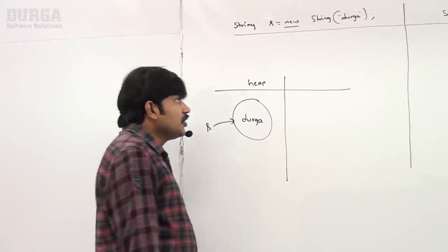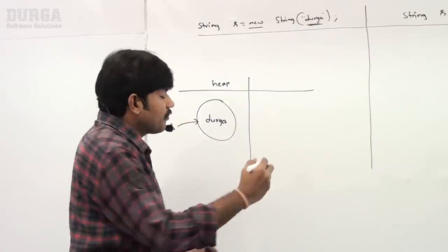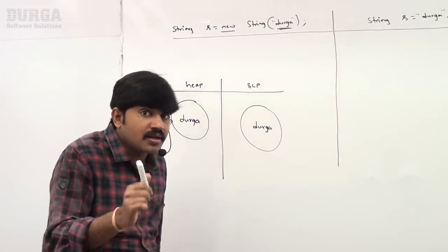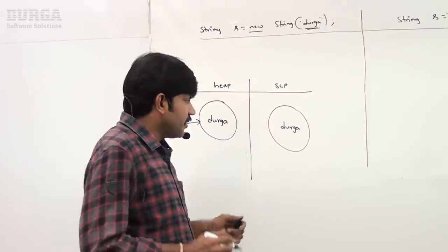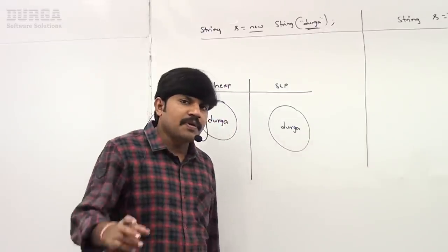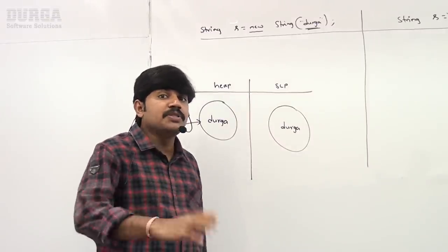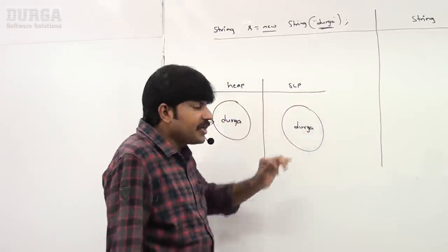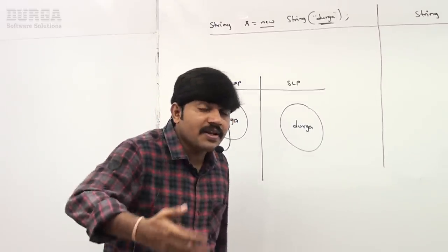Now `new String("durga")` — the string literal "durga" — for every string literal, for future reuse, one object will be created in the SCP area. SCP stands for String Constant Pool. There is no explicit reference variable for the SCP object, but internally an implicit reference variable will be maintained by the JVM. So two objects are created: one in the heap area that `s` points to, and one copy in the SCP for future reuse.